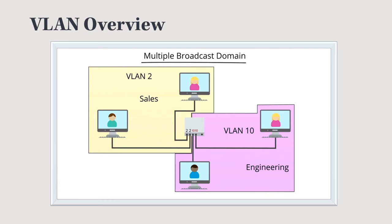As an example: if all devices were on the same LAN, we'd have four devices' worth of broadcast traffic. By splitting them into two VLANs, we now have only two devices' worth of traffic on each VLAN, which reduces congestion and improves overall network performance.